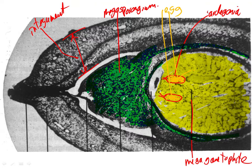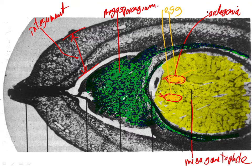When the integument matures, those two layers will have another function in the mature seed. Both the integument and the megasporangium have a couple of layers in them. This leaves us with two cavities: one between the integument and the megasporangium, and one between the megasporangium and the archegonium.